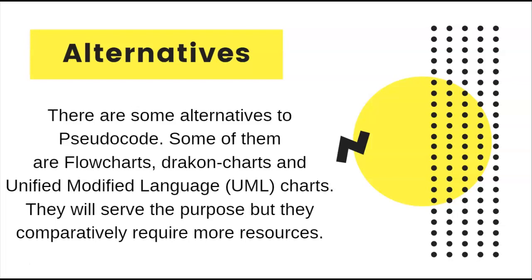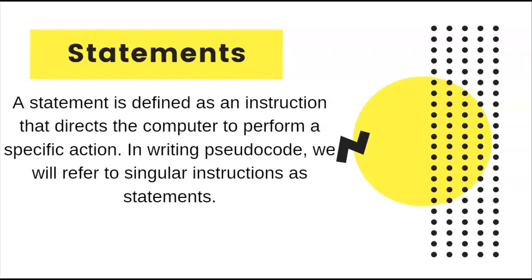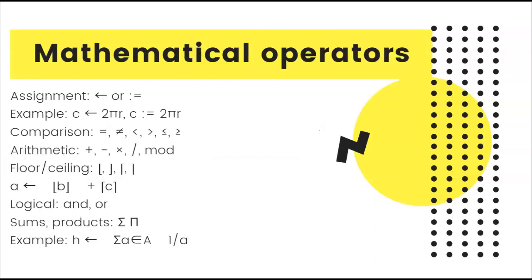What is a statement? In pseudocode, whatever we write on a line is called a statement. It is not directly understandable by the computer, but it is easily understandable by a human being. Each and every line we write is called a statement in pseudocode.